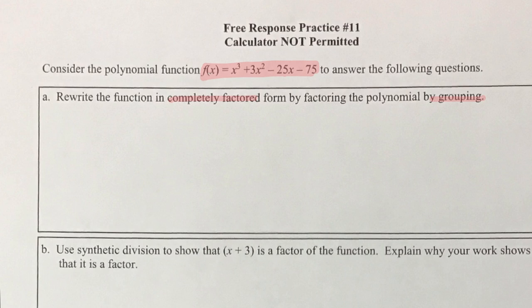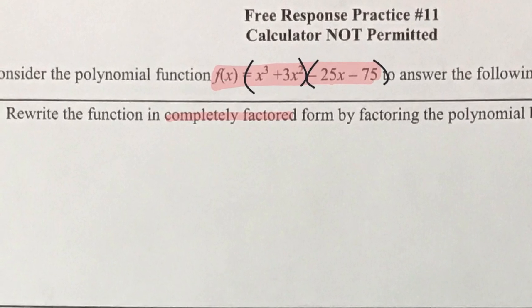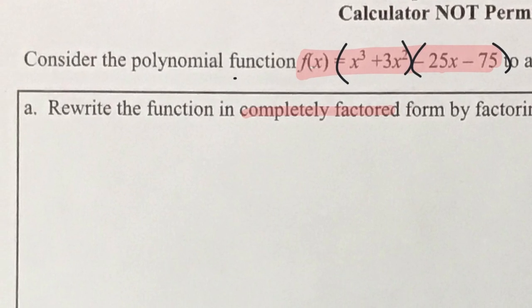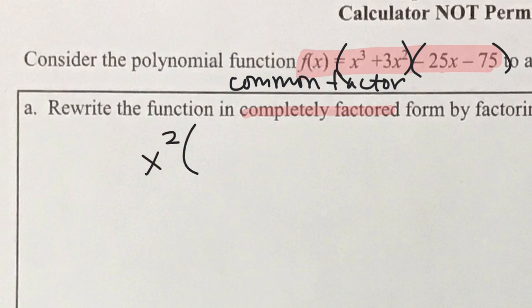In grouping, we want to put parentheses around the first two things and parentheses around the second two things. Then we ask what these things have as a common factor — what do x³ and 3x² have as a common multiplier? They have x² as a common multiplier, which means we have an x plus 3 left over, so we put that in parentheses.